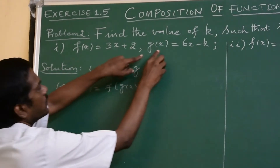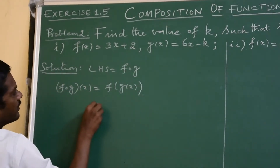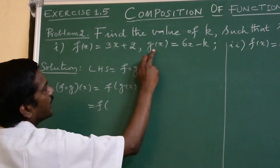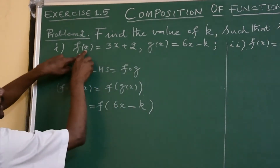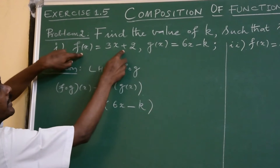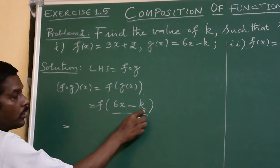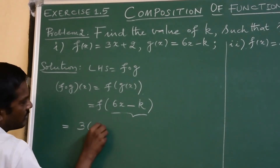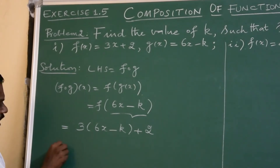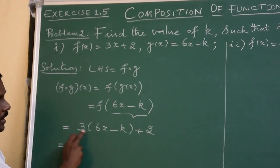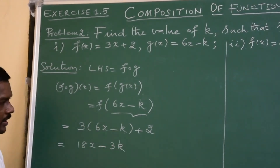We are going to say that f of g of x is equal to f of (6x minus k). We substitute g of x, which is 6x minus k, into f. Distributing: 3 times (6x minus k) plus 2 gives us 18x minus 3k plus 2.